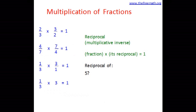Now let's look at some more reciprocals. What would be the reciprocal of 5? What can I multiply with 5 to get the answer 1? That is 1 over 5. Now what about 1? One multiplied by 1 is 1, so 1 is a reciprocal of itself.